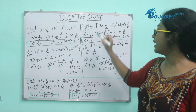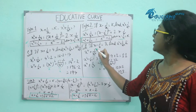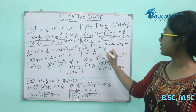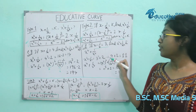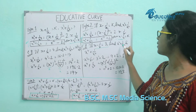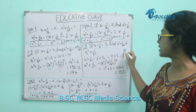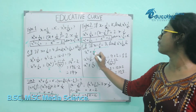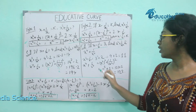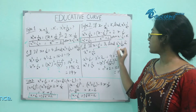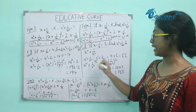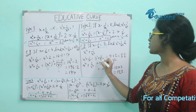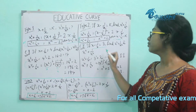An example: here we have x minus 1 by x is equal to 3. Find out x squared plus 1 by x squared, and x to the power 4 plus 1 by x to the power 4. For x squared plus 1 by x squared, we calculate 3 squared plus 2.